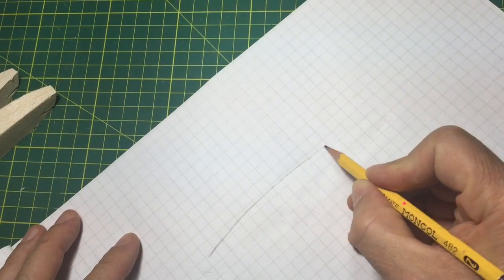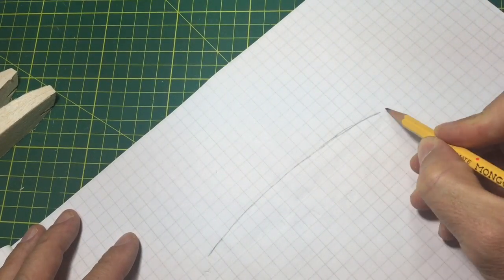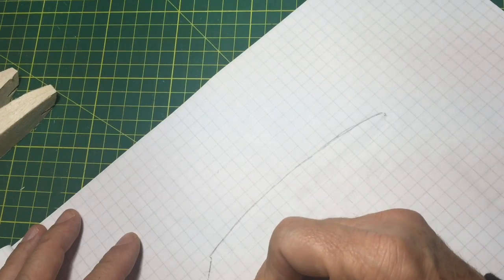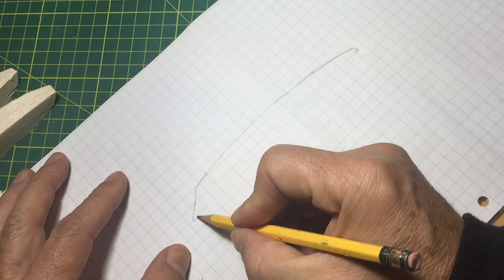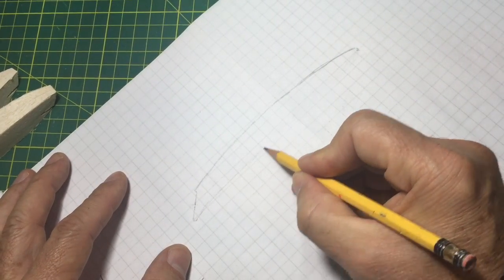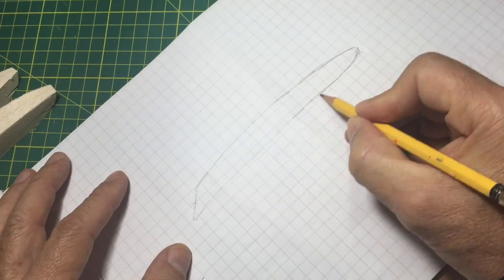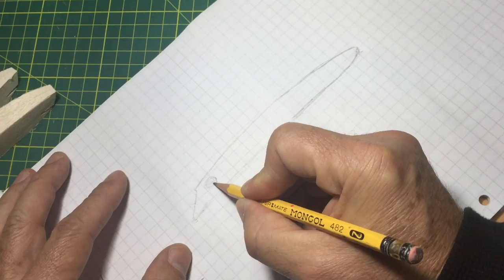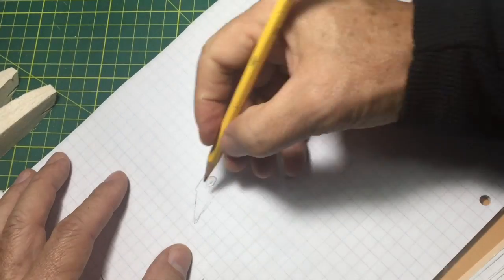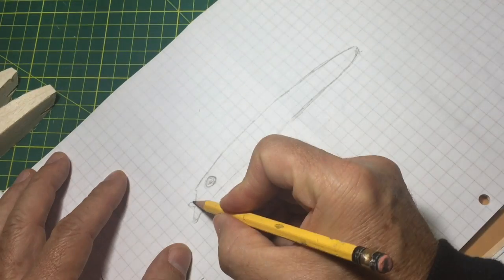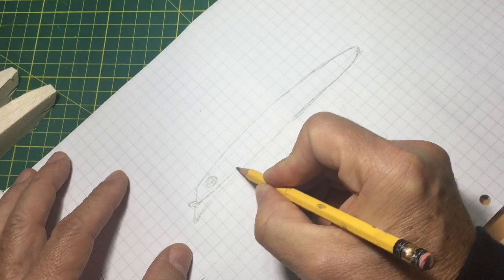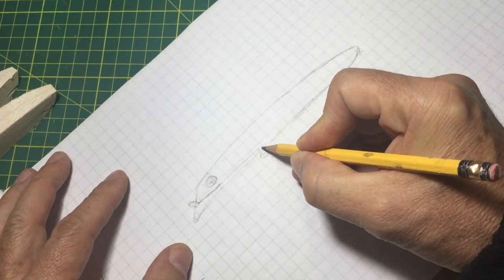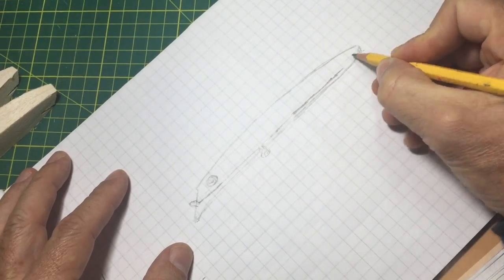As many projects, this one starts on a piece of white paper. Using a pencil, I began drawing the lure's body, as you can see, marking the eye, and then I draw the wire through that will hold the hooks of the lure.